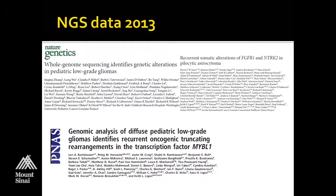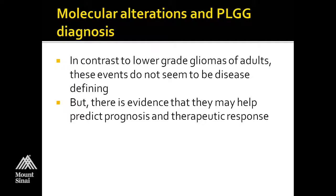In addition to BRAF alterations, there have been a number of NGS papers from Keith Ligon's group, the St. Jude group, and Heidelberg identifying other less frequent alterations within pediatric tumors, some enriched in particular types — such as MIB or MIBL1 alterations, which we tend to see relatively frequently in pediatric diffuse astrocytomas. Importantly, in contrast to the lower-grade gliomas of adults, these molecular alterations in pediatrics do not seem to be disease-defining — they're not diagnostic of a particular disease and can be seen across a number of different morphologies — but there is evidence that they may help predict prognosis and therapeutic response.